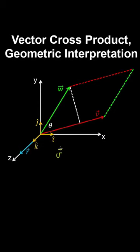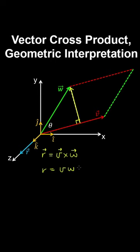The vector cross product is another way of multiplying vectors which returns another vector, whereas the dot product returns a scalar. The magnitude of this vector is equal to the magnitude of V multiplied by the perpendicular component of W, which is the magnitude of W times sine theta, where theta is the angle between the vectors. Because it's a magnitude, we take the absolute value of sine theta.